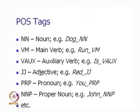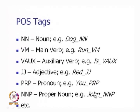JJ is the adjective tag — note that 'adjective' is sometimes pronounced with a D sound very similar to the J sound, so 'red' is an adjective, as in 'red ball,' and red_JJ would be the tag. PRP is also an important tag for pronoun, so 'you' underscore PRP is the tagged word. NNP is the tag for proper noun — John_NNP shows the tagging for John, as in the sentence 'John runs.'